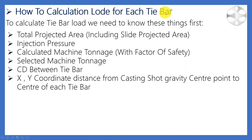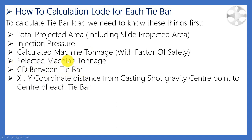Each tie bar can carry 25% of 530 tons, which is 132.5 tons. So we are going to calculate how much load every tie bar is carrying, and it should not be more than 132.5 tons. To calculate the load for each tie bar, we need to know: first, the total projected area including slide projected area; next, the injection pressure we are using; then we calculate the machine tonnage with a safety factor.